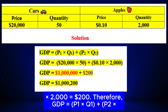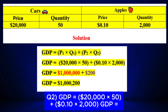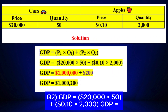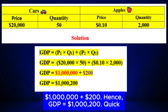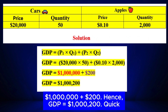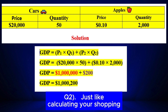GDP equals P1×Q1 plus P2×Q2. GDP equals $20,000 times 50 plus 10 cents times 2,000. GDP equals $1,000,000 plus $200. Hence GDP equals $1,000,200. Formula summary: GDP = P1×Q1 + P2×Q2 — just like calculating your shopping bill: price times quantity for each item, add them all together. That is your GDP.